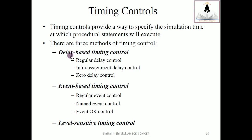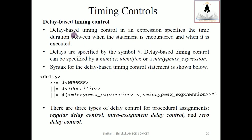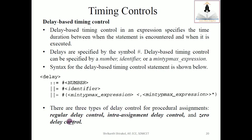First we will take up delay-based timing control. Delay-based timing control is an expression that specifies the time duration between when the statement is encountered and when it is executed. Delays are specified by the symbol hash (#). Delay-based timing control can be specified by a number, identifier, or min-typical-max expressions, as discussed in gate level modeling. In delay-based timing control there are three types: regular delay control, intra-assignment delay control, and zero delay control.